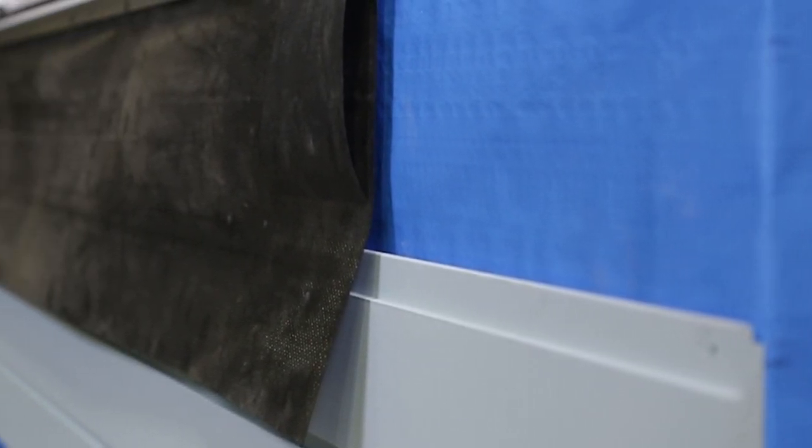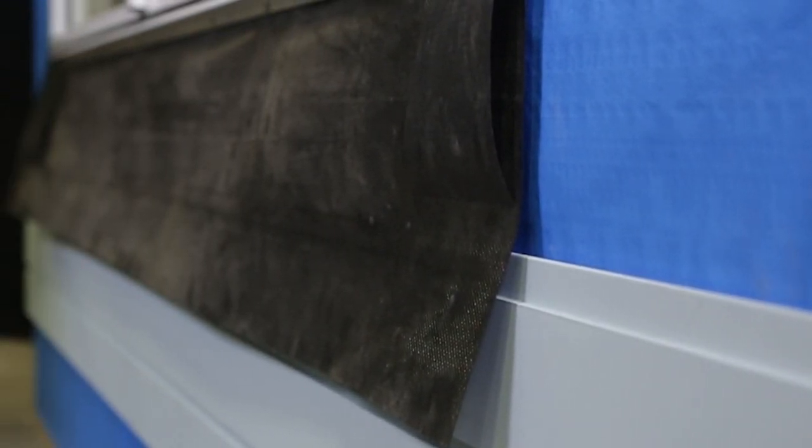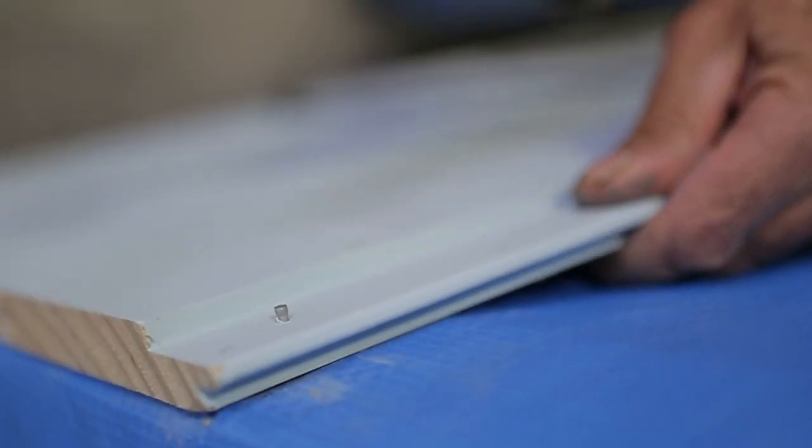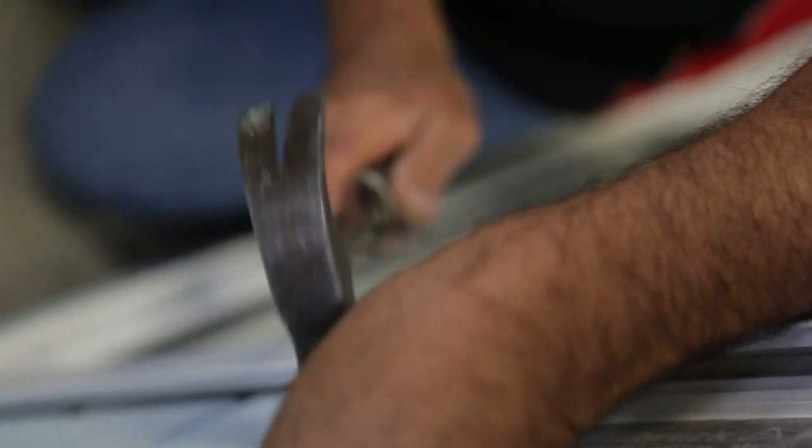There are quite a few different types of cladding used nowadays and each type will need a slightly different approach. The most common varieties are shiplap, like we're using here today, vinyl or composite boards, or fiber cement sheeting. You should follow the manufacturers details for each.